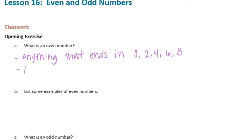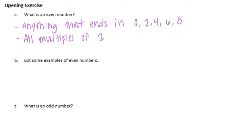Something else you could say: it's anything that's a multiple of 2, or anything that can be evenly divided by 2. Let's list a few examples of even numbers: 100, 2, 3, 40, 6, 422, and 74.